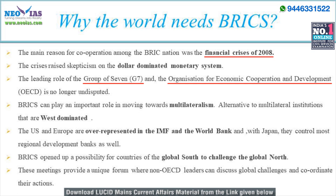The leadership of G7 and OECD groups was no longer undisputed. BRICS emerged as an alternative to the West — the American and European Union dominated institutions — as the US, EU, and Japan together control most of the regional development banks. BRICS is also an important platform for discussing global challenges and coordinating actions, and it opens up a possibility for the Global South or third world countries to challenge the Global North.